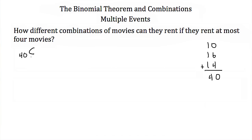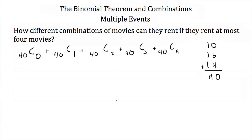We add 40 choose 0, plus 40 choose 1, plus 40 choose 2, plus 40 choose 3, plus 40 choose 4. One key way to know you have to add your combinations instead of multiplying is when the problem says 'at most' or 'at least' — that's a big hint you're going to be adding your combinations.